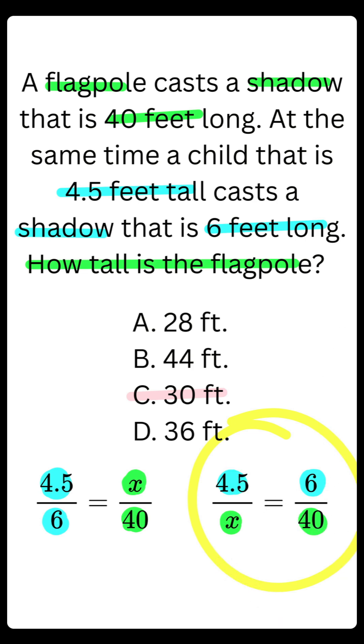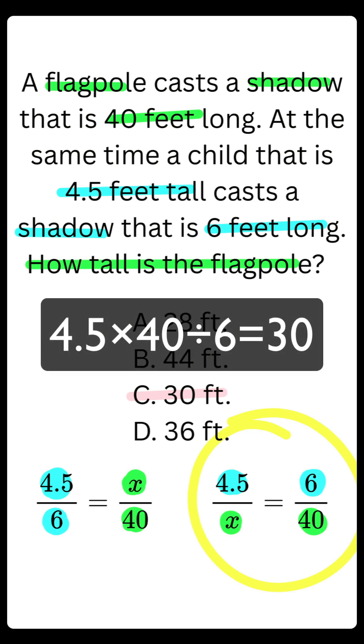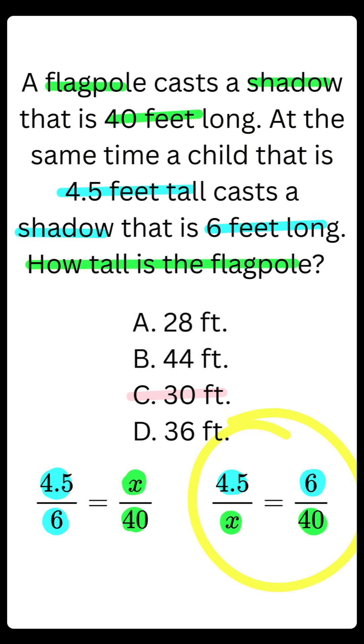Now if you notice here, if you cross multiply and divide, you still will be taking 4.5 times 40 divided by 6. Your final answer will still be 30 feet, the height of the flagpole.